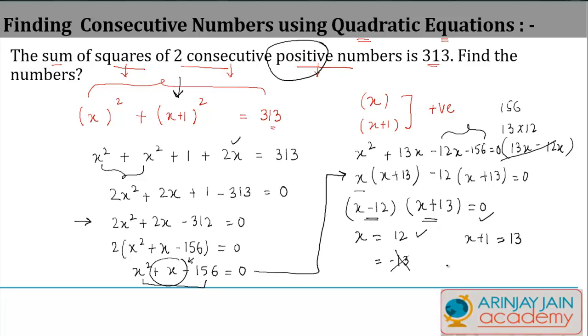So these are the two consecutive numbers, 12 and 13, whose squares are equal to 313. Let's verify: 12² gives you 144, 13² gives you 169, and if you do the total of these two you get 313, which proves that our answer is correct.